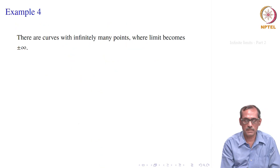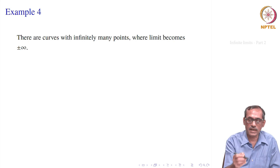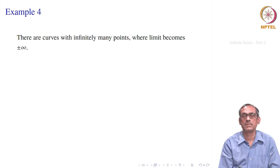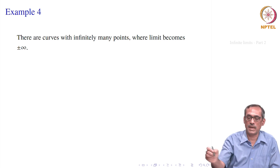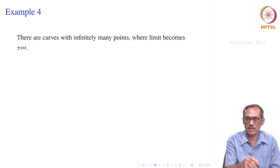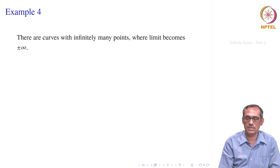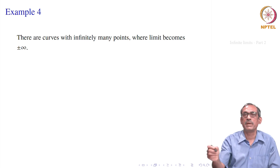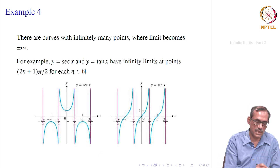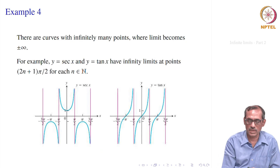Let us take the next example. There are curves with infinitely many points where the limit becomes plus or minus infinity — not only at endpoints or a single point like minus 2 in the earlier example, but infinitely many points where it becomes infinity. Usually trigonometric functions are easy to give examples of this.